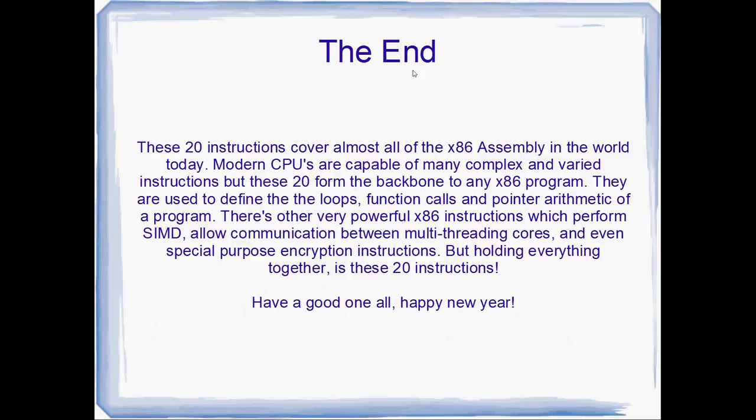And that's the end! These 20 instructions cover just about all of the x86 in the world today. What's super interesting is that these instructions have been with us since the 70s — they come from the very first x86 instruction sets and we're still using them in 2014. Modern x86 CPUs are capable of well over 500 instructions, but the 20 we've looked at today form the backbone to x86 assembly programs — used to define loops, function calls, and pointer arithmetic. There are other powerful instructions like SIMD, multi-threading communication instructions, and even special purpose encryption instructions, but these 20 hold everything together. That's my Top 20 list — thanks for watching, have a good one and Happy New Year!